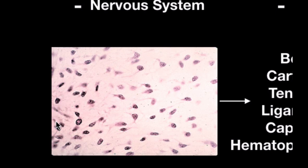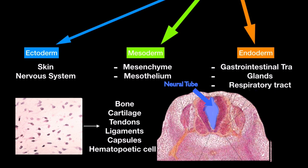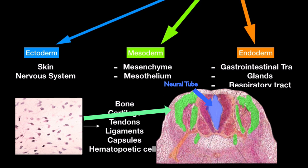These mesenchymal cells form the mesenchyme, which is an embryonic tissue — you find mesenchymal cells during embryonic development. Looking at this microscopy picture, the neural tube is highlighted in blue in the middle. To find the mesenchymal cells, you need to look at the sides of the neural tube, highlighted in green. So if you ever look at it under the microscope, look at that area to find the mesenchymal cells.